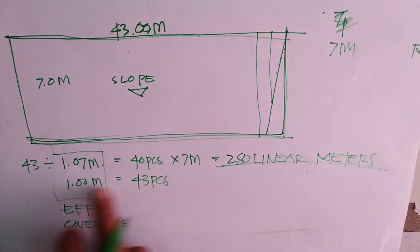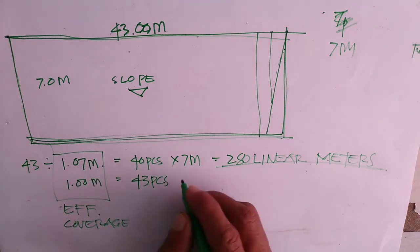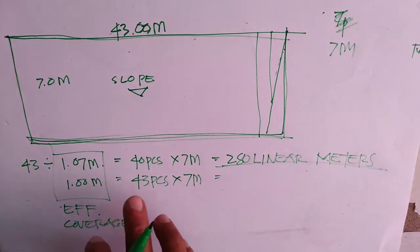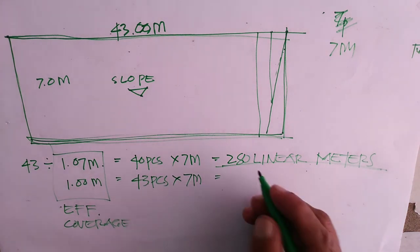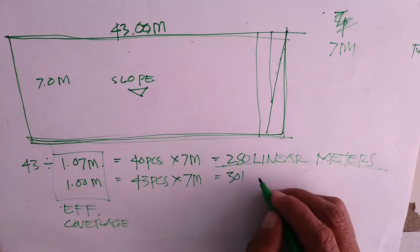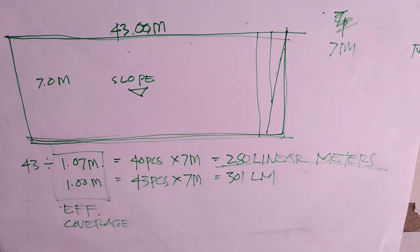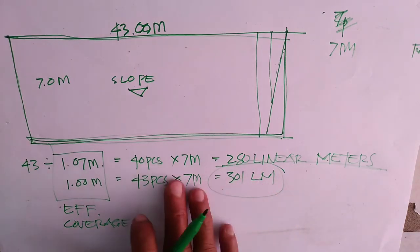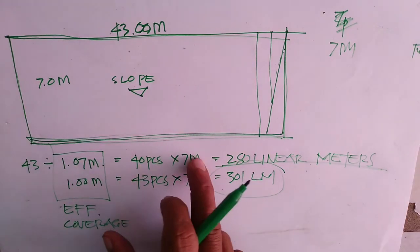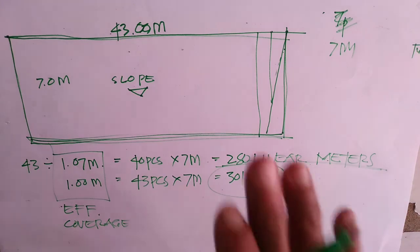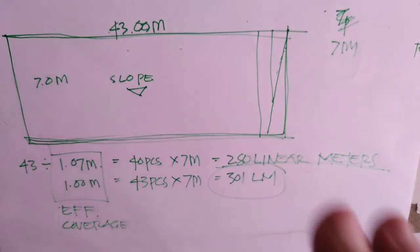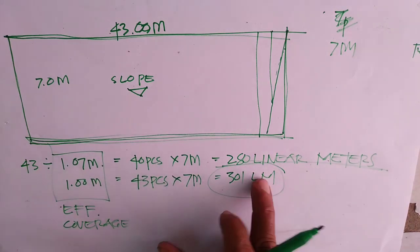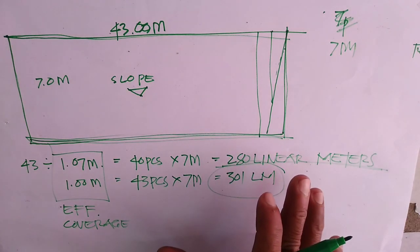Pero, pagka ito po yung ginamit nyo, yung makitid na 1 meter yung coverage nya, tataas po yung linear meters nya. So, 43 pieces times 7 meters, magiging 301 LM yung total nya. Pero, ikukonsider nyo pa rin yung presyo nya. Kasi kung minsan, ito mas mahal to kisa dito. So, titingin pa rin kayo, doon mismo sa net price nya. Yung may mga discount na. Ito, guide lang po ito kung paano nakukuha yung linear meters.